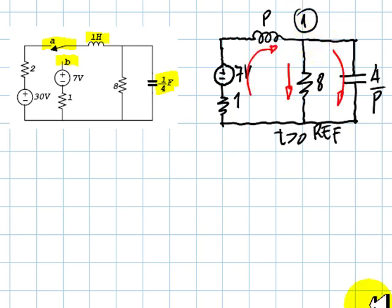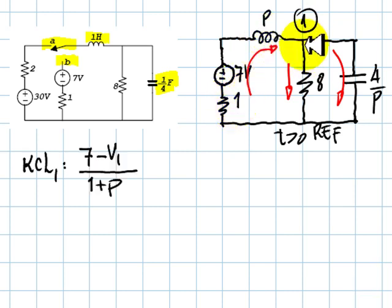We begin with assumed directions of currents in the circuit, and then we write the KCL equation for node 1. Currents going in? This one: 7 minus V1 divided by the impedance of the branch, 1 plus P. That equals the two currents leaving the node. This one, V1 over 8, and this other one, V1 divided by 4 over P.